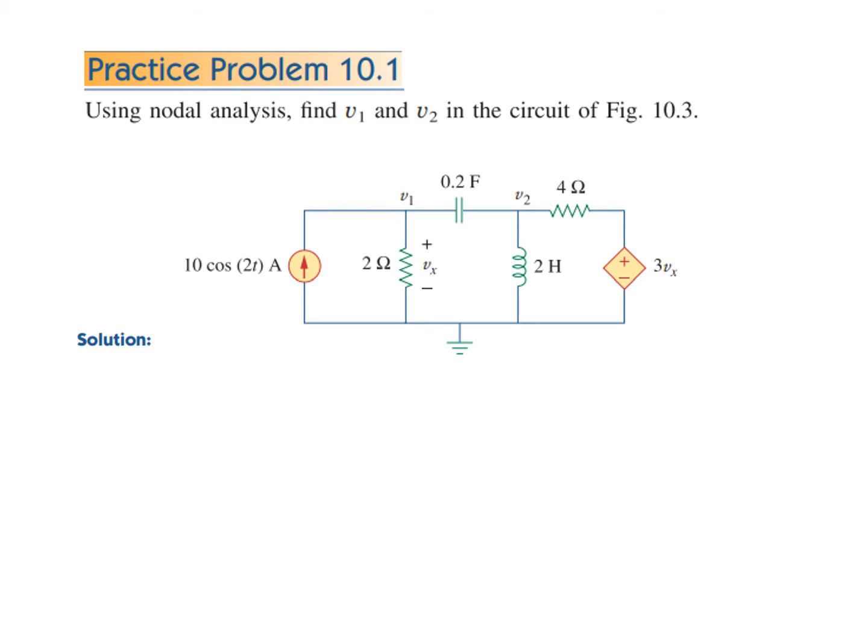As we mentioned we have to convert into frequency domain or phasor domain. For that we first of all note down the value of omega from here you can see cos omega t so omega is 2 radians per second and then convert everything into phasor. So 10 cos t will now be 10 angle zero.